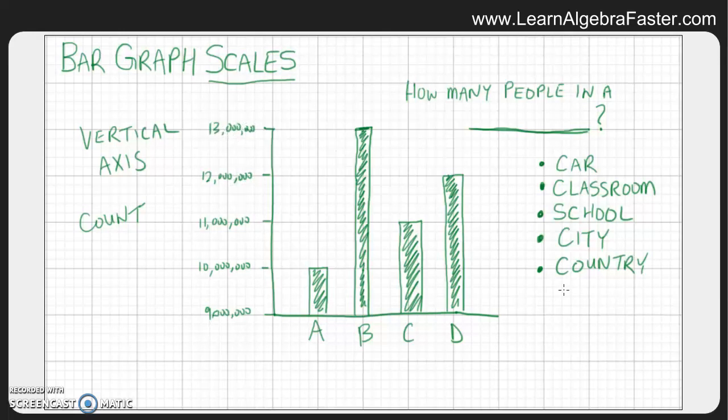So if you notice the numbers that we used for each type of graph were specific and realistic to those graphs. And we did that by changing the scale or the vertical axis. So that's how you could have data that change based on the scale.